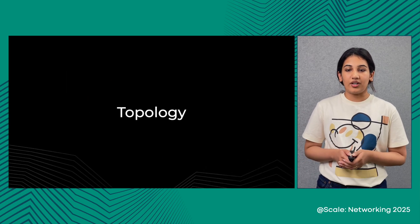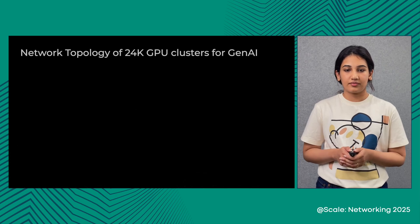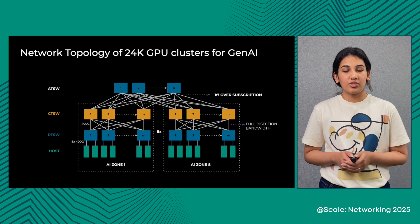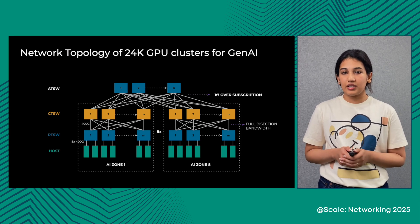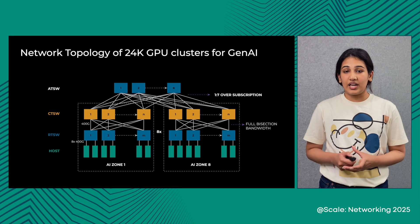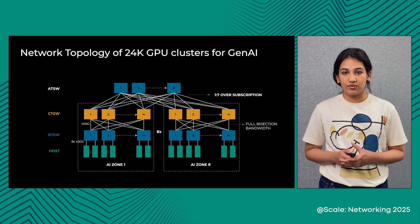Let's talk about the topology that solves these changing model requirements. Last year at Networking@Scale, we talked about our 24K clusters. The basic building block of an AI cluster is an AI zone. In order to form a 24K cluster, we took eight such zones and connected them together using an additional layer of switching called the aggregate training switches. At this layer of network switching, the oversubscription ratio is 1 to 7.